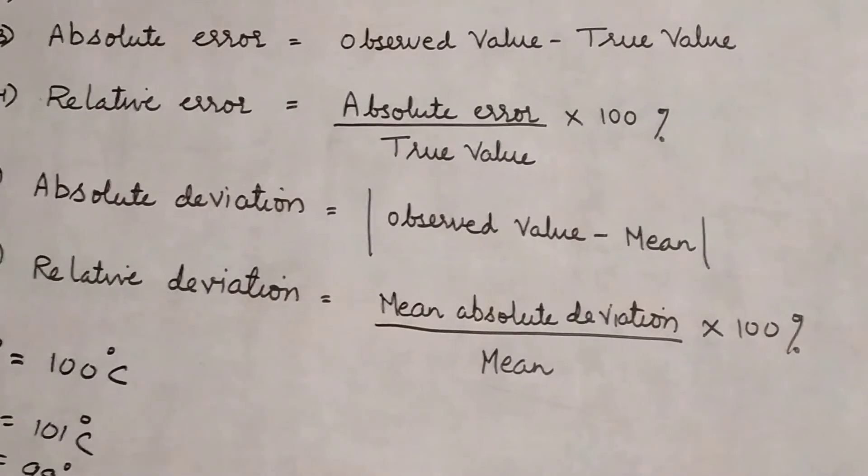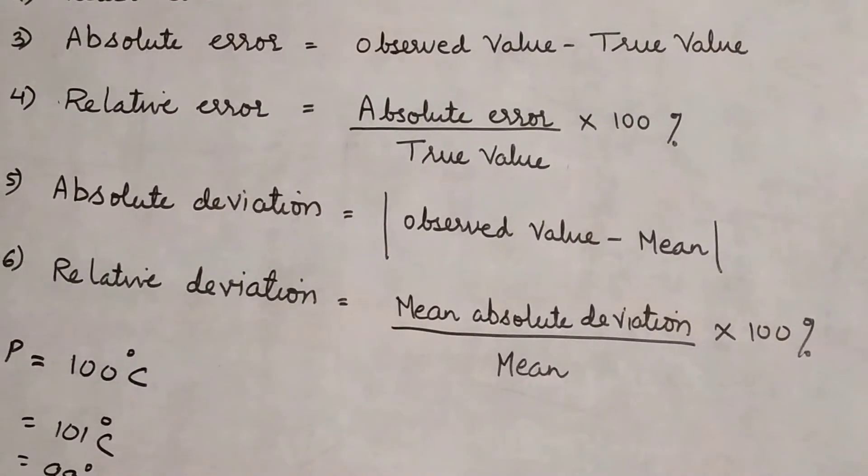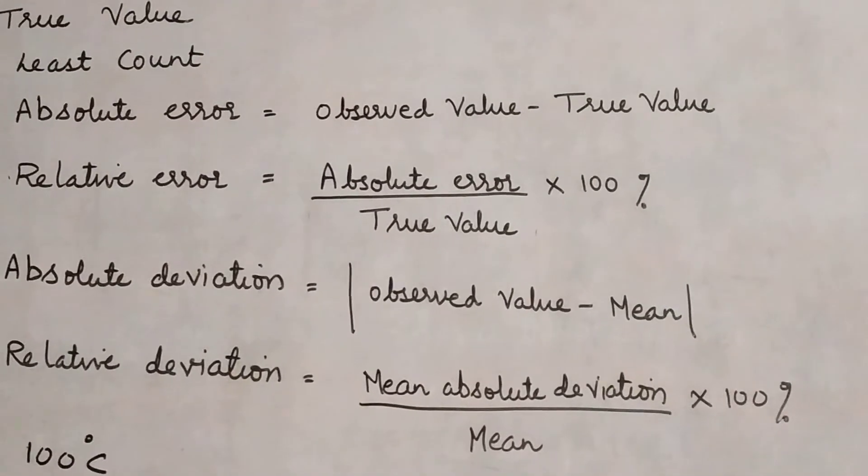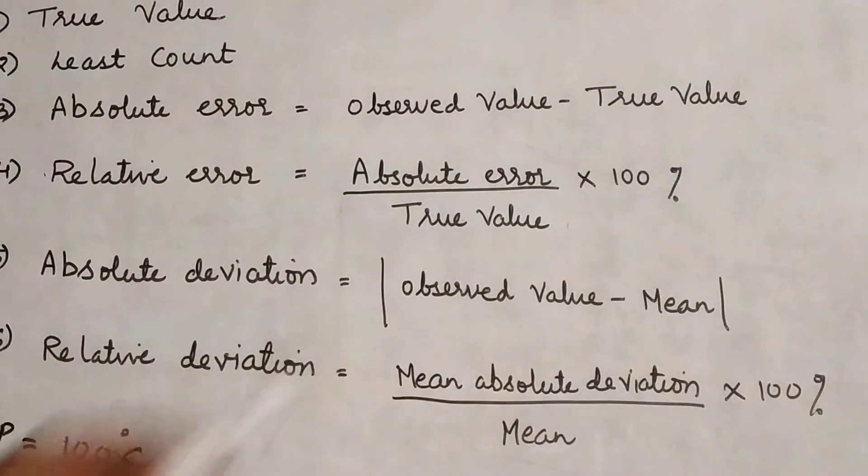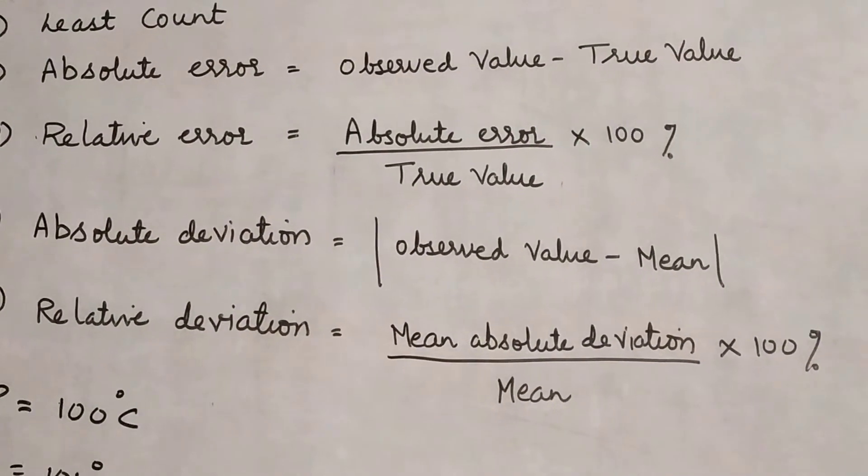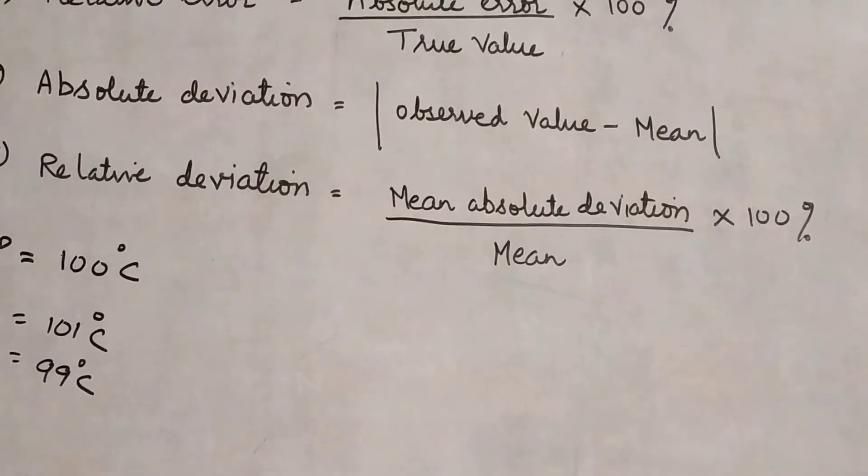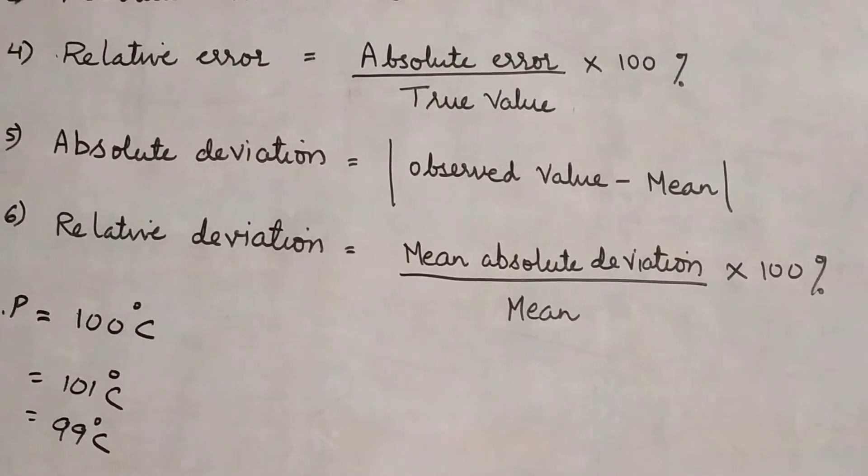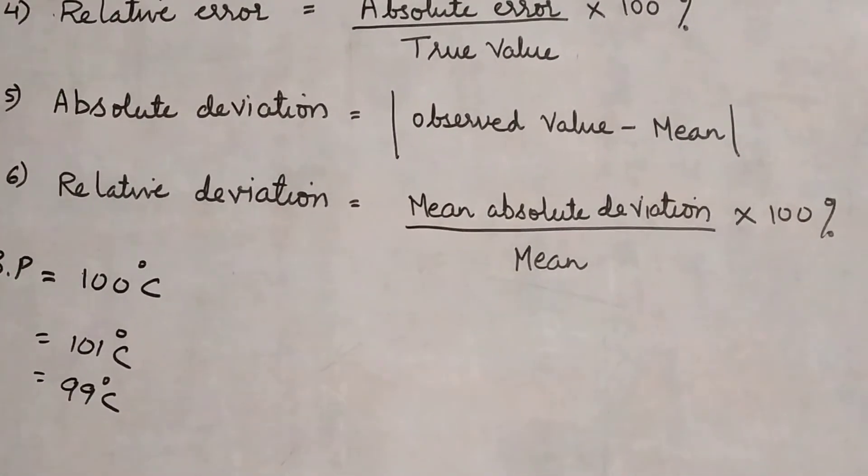Absolute deviation - what is deviation? Deviation means how much we deviate from the true value. That is called deviation. Absolute deviation equals modulus of observed value minus mean. This is the symbol of modulus. What is mean? Suppose when we do an experiment, we take 4 readings. From those 4 readings, find the mean. This is what we actually do in the lab during practicals.